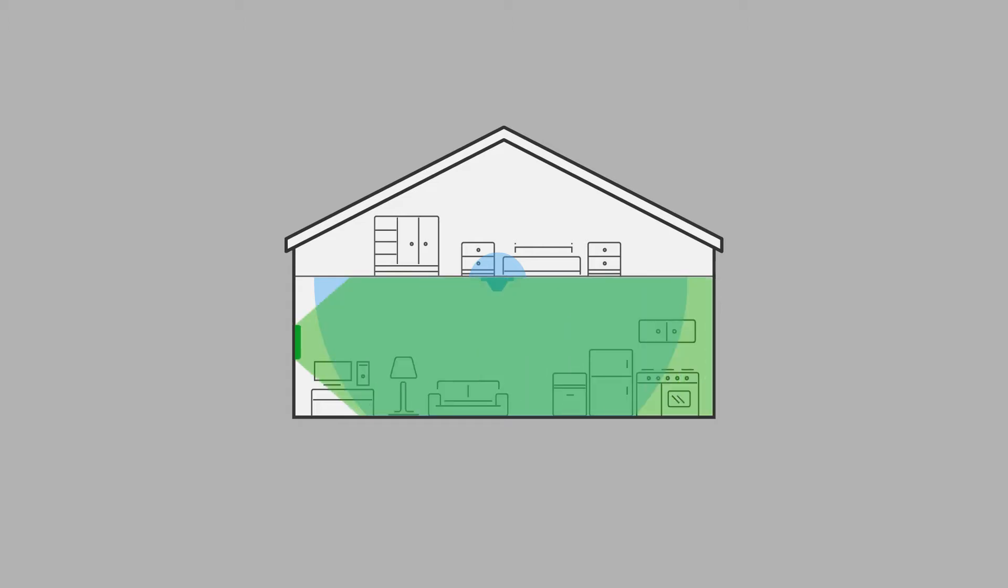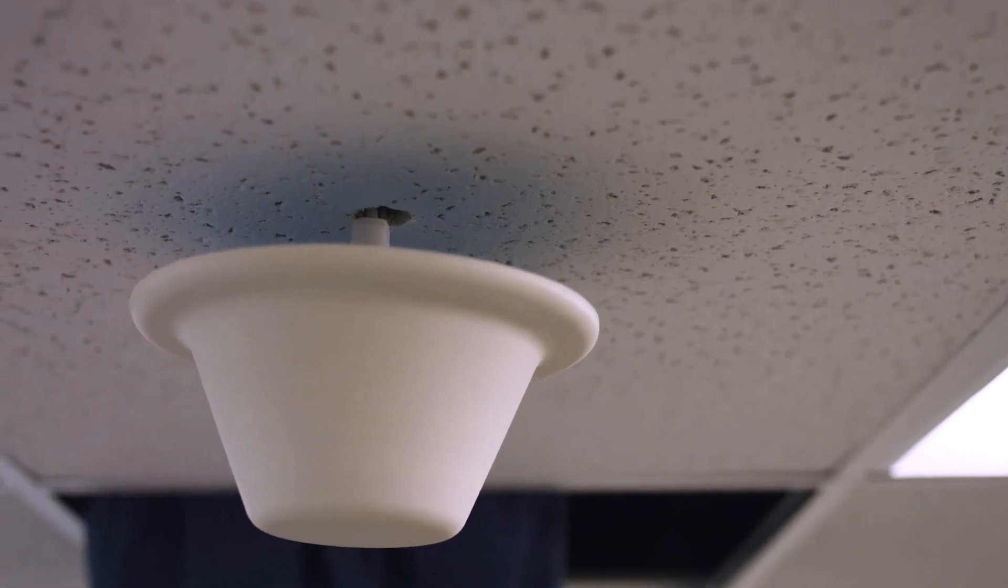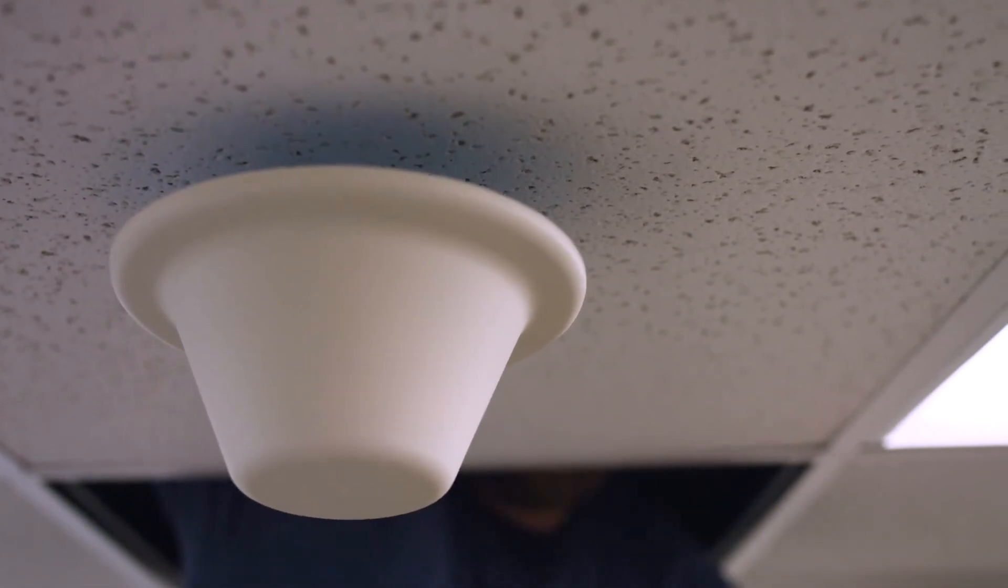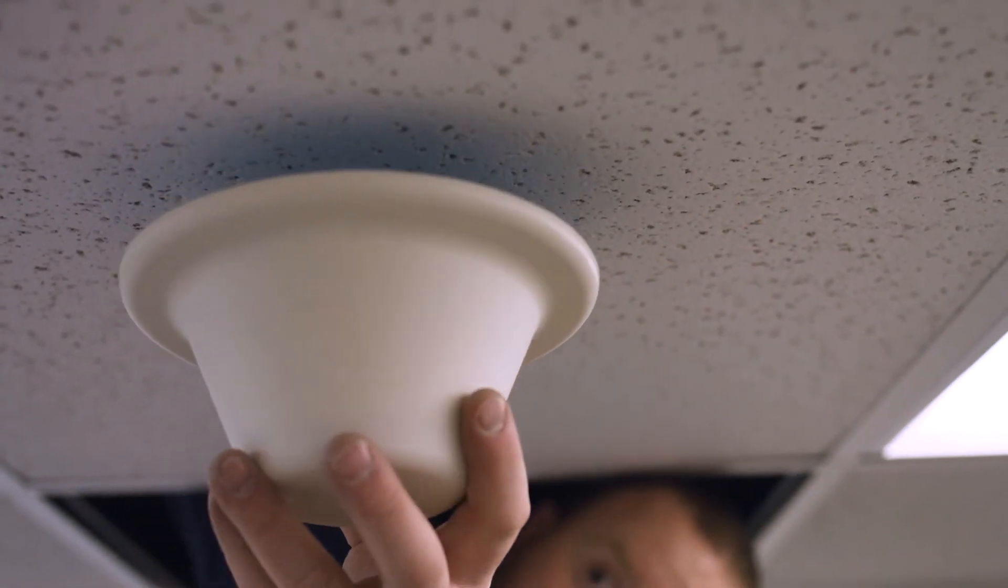Dome antennas have a wider pattern but less gain than a panel antenna, so their signal does not reach as far. Dome antennas are best suited for drop ceilings and used to fill a room in all directions with signal.